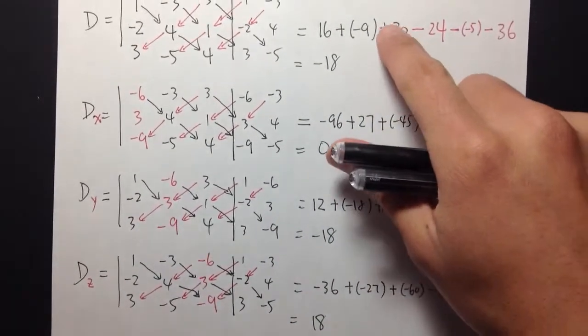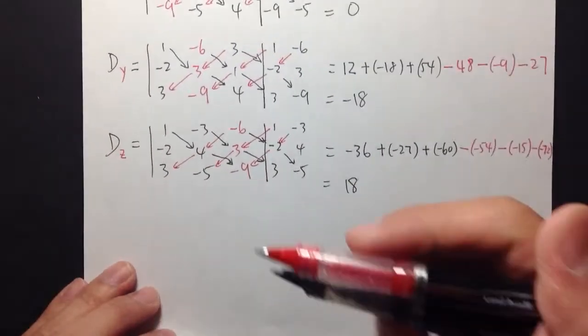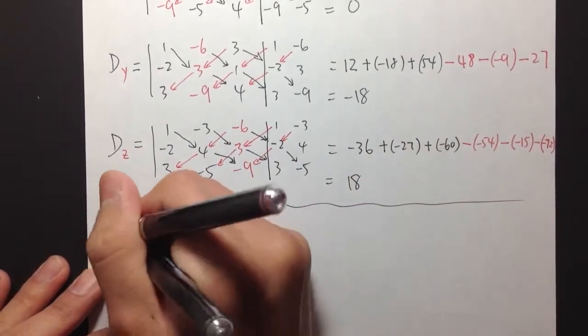So we got our d, dx, dy, and dz, the determinants of this matrix. By Cramer's Rule,